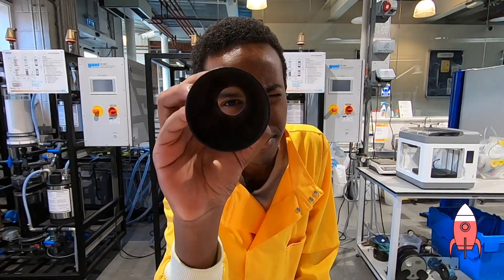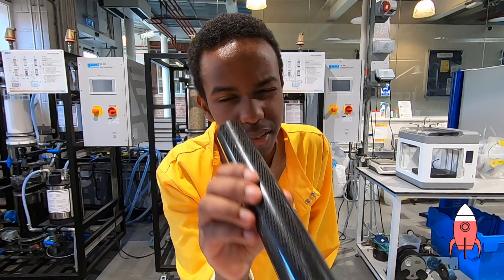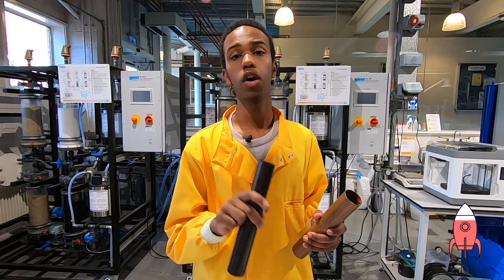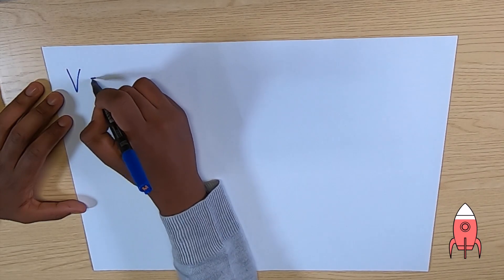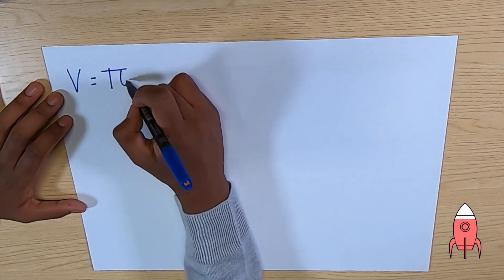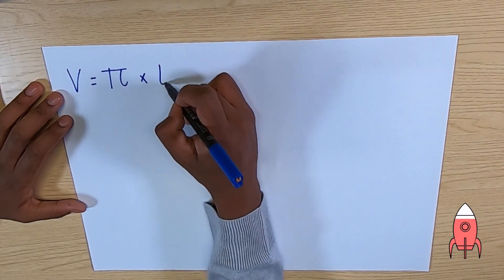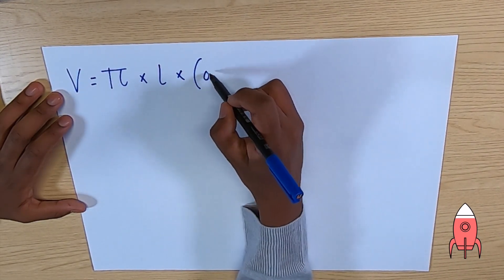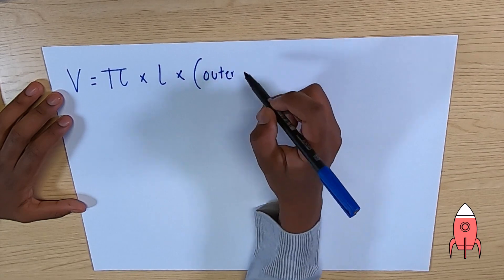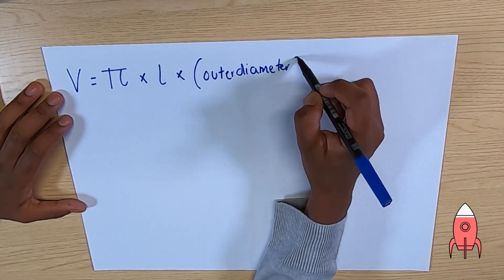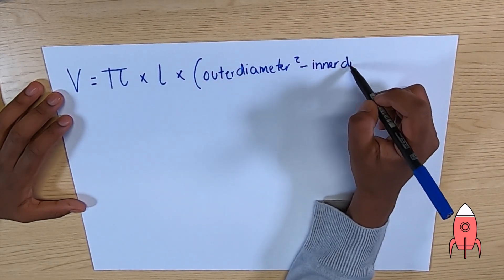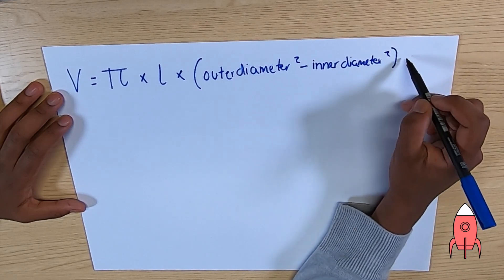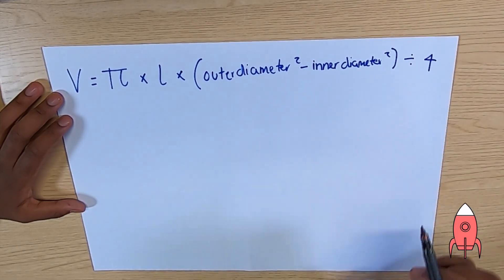You may have noticed that two of these tubes are hollow. We have two special methods for working out their volumes. My preferred method for calculating volume is: volume equals pi, times the length of the cylinder, times the outer diameter squared minus the inner diameter squared. Don't forget your brackets — all divided by four.